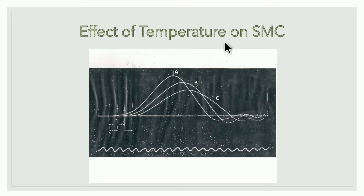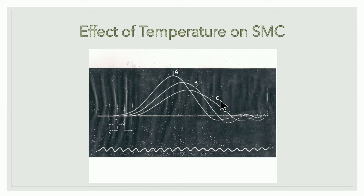You must write the complete name — effect of temperature on simple muscle curve — because there is another effect of temperature graph. The questions asked are: what is A, what is B, and what is C. A is hot saline (usually 42°C), B is normal saline (37°C), and C is cold saline (usually 26°C).